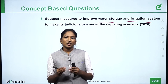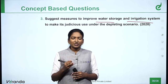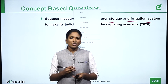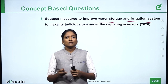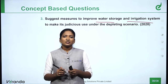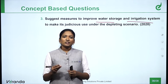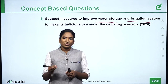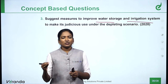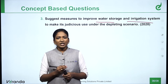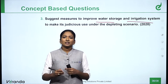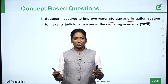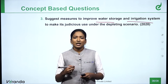In writing this answer, start the introduction with a brief mention of what water storage and irrigation systems are, then immediately move into explaining the measures. The answer should not be in a single passage; it should be in bullet points. You can also organize it with separate subtopics for water storage and irrigation system, covering the depleting scenario, maintaining continuity from top to bottom without discontinuity.